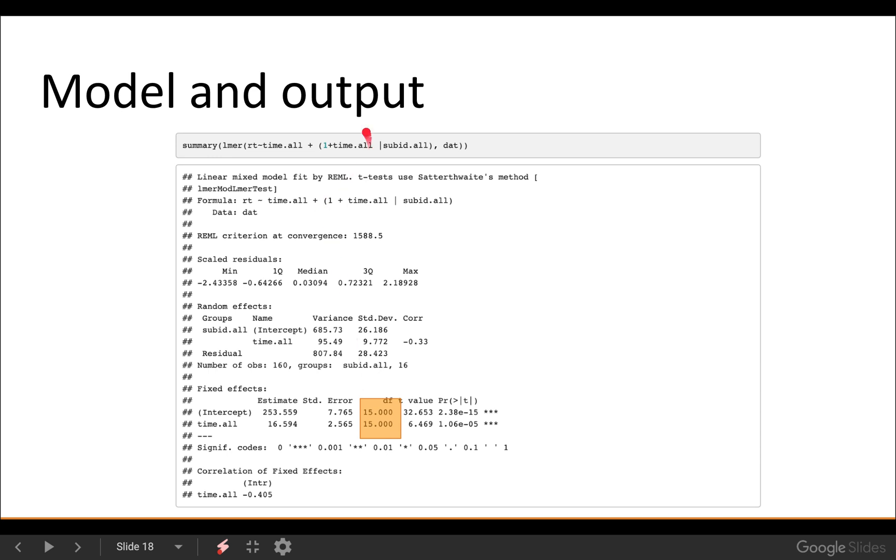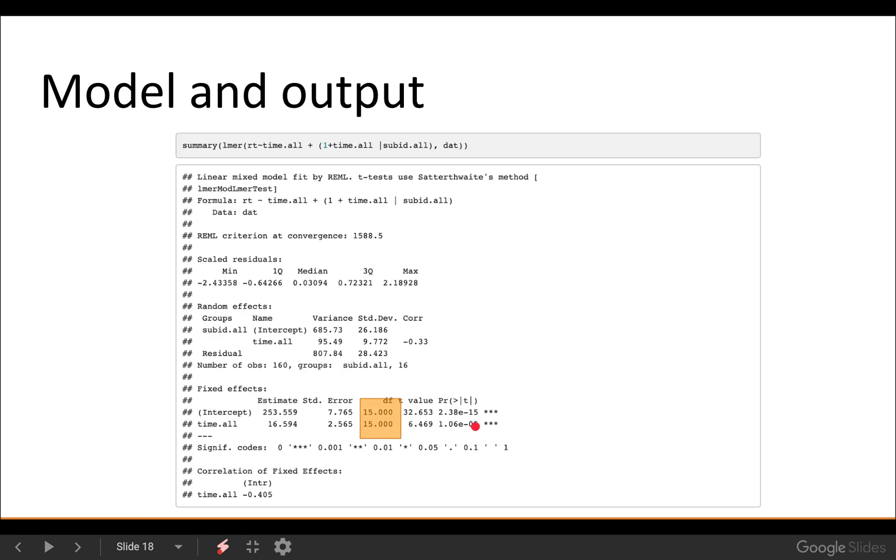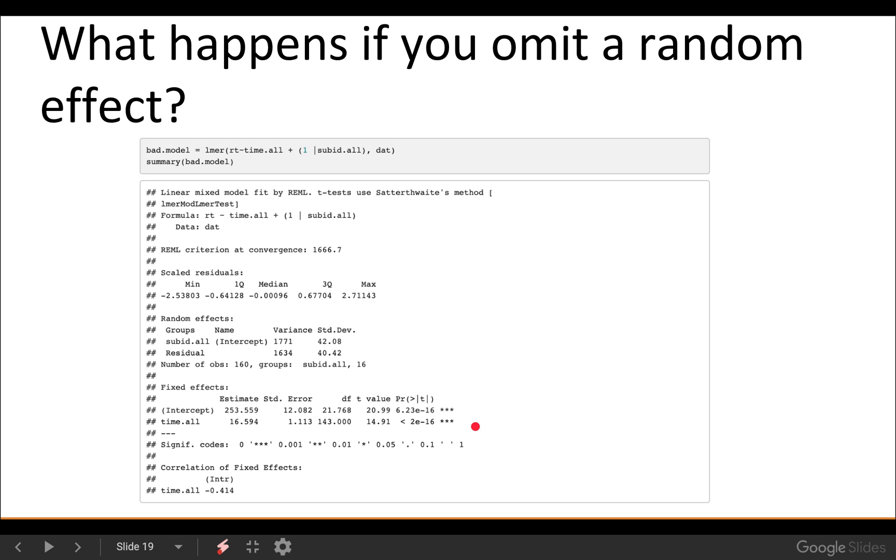So, I'll show you how they change if it's not correctly set up. I'm going to remove time from the random effects. So now the model doesn't know that there are repeated measures when it's calculating that time slope. So it's really calculating across everything. So the estimate doesn't change, it's still 16.594. But now the degrees of freedom are 143. And you can see the degrees of freedom for the intercept go up as well. And the intercept is actually fine. But this is really high. And it's closer to the total number of observations, which is 160. There's 10 observations per subject and 16 subjects. And so now the p-value is much, much smaller and the t-statistic is much larger than it should be because the degrees of freedom are wrong. So, don't forget your random effects.